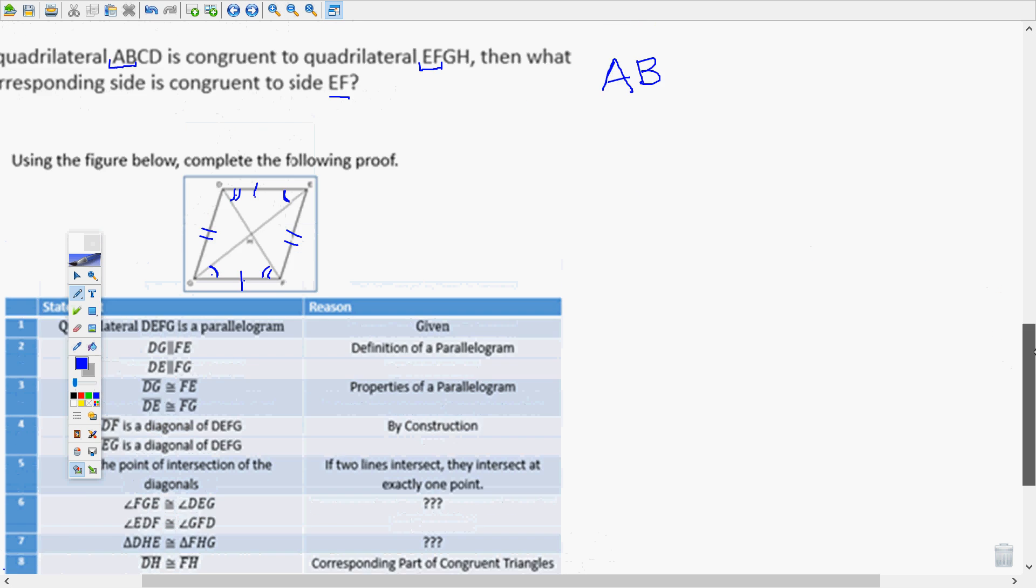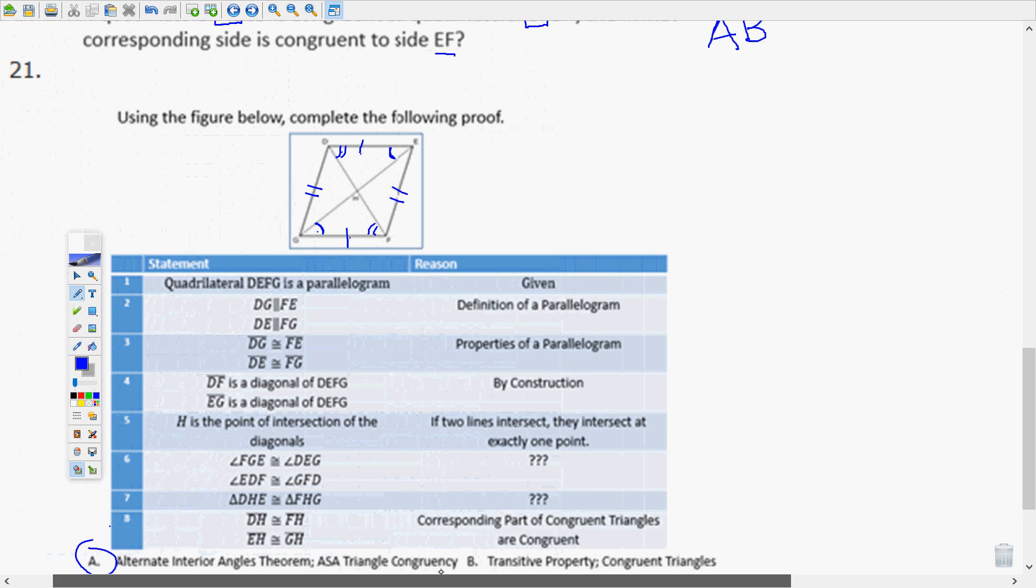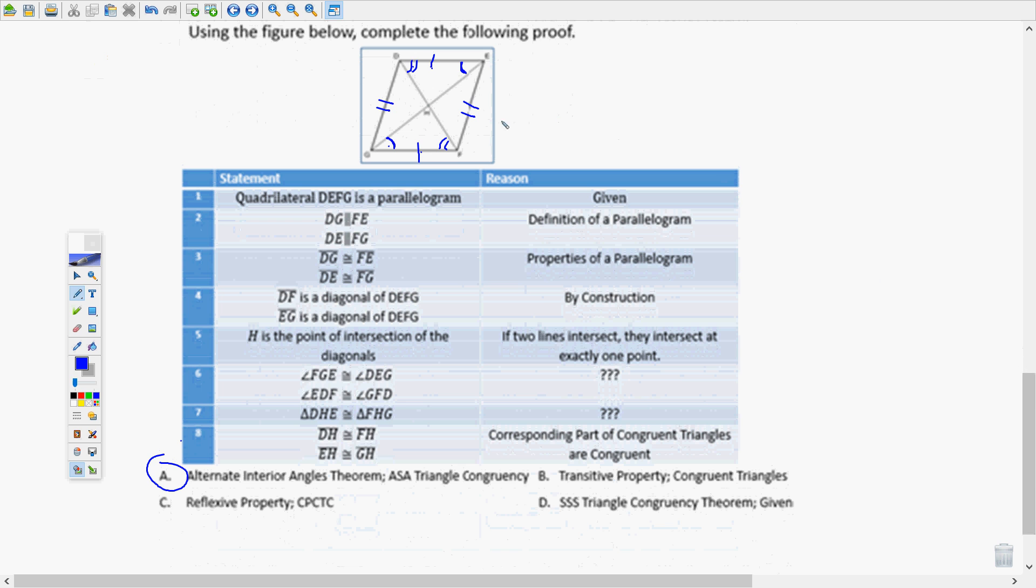Number 21, use the figure below in the following proof. Now listen, most of the proofs will probably be drag and drop so you can follow the progression. Mark your picture, mark your diagram. And then figure out what it is that they're asking for down here. They're asking why would angle FGE be congruent to angle DGE and why would angle EDF be congruent to angle GFD? So you have parallel lines or segments DG and FE, and you have parallel segments DE and FG. They're also congruent, properties of parallelograms, definition of parallelograms. They have that the diagonals are here and here by construction.